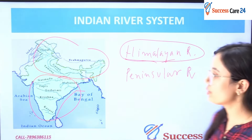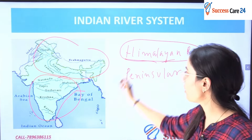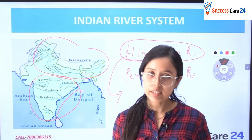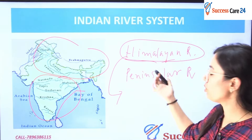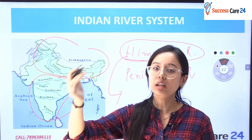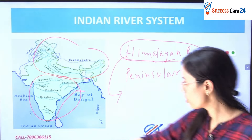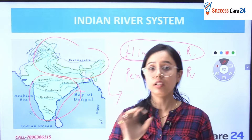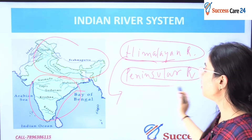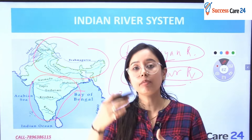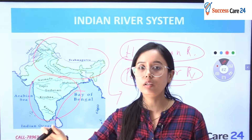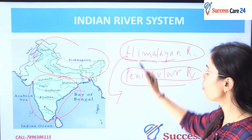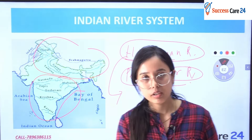Himalayan rivers are perennial in nature — meaning there will be water in those rivers throughout the year — because they originate from Himalayan glaciers which melt continuously. Peninsular rivers, on the other hand, are seasonal in nature. For example, during monsoon season there will be water, but when there is no monsoon, there will be no flow. This is the definition of perennial versus non-perennial rivers.